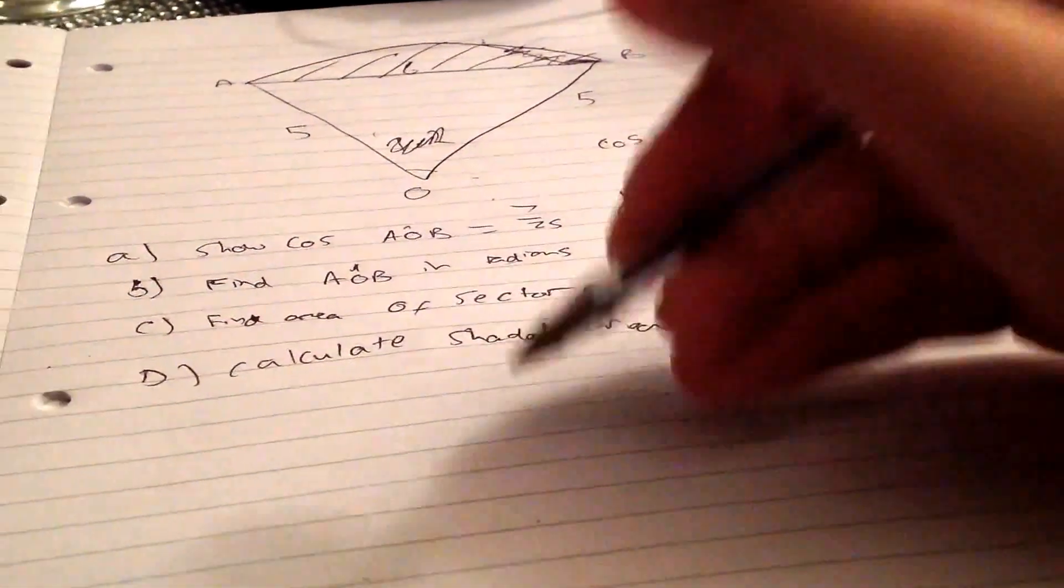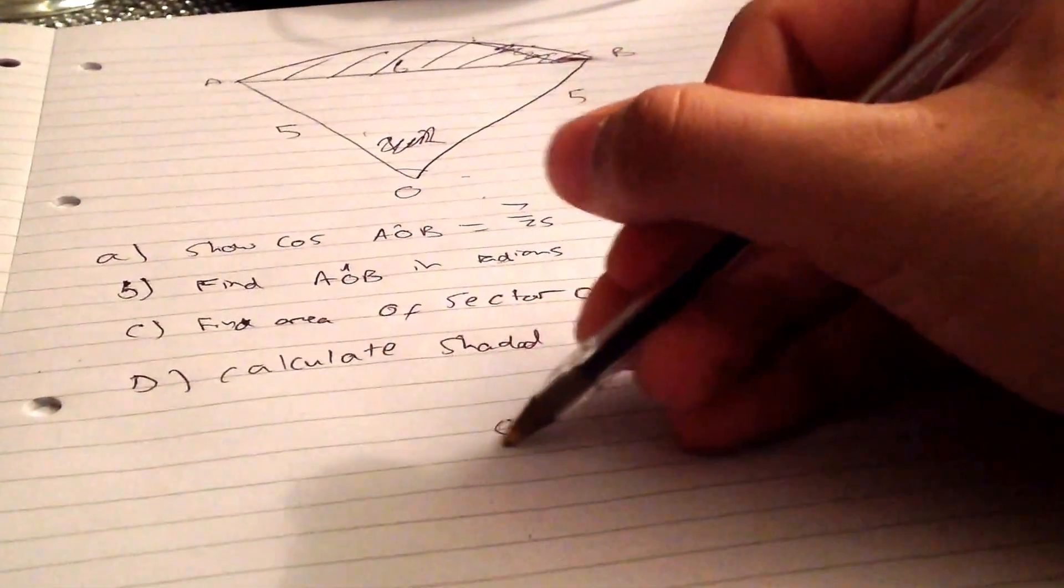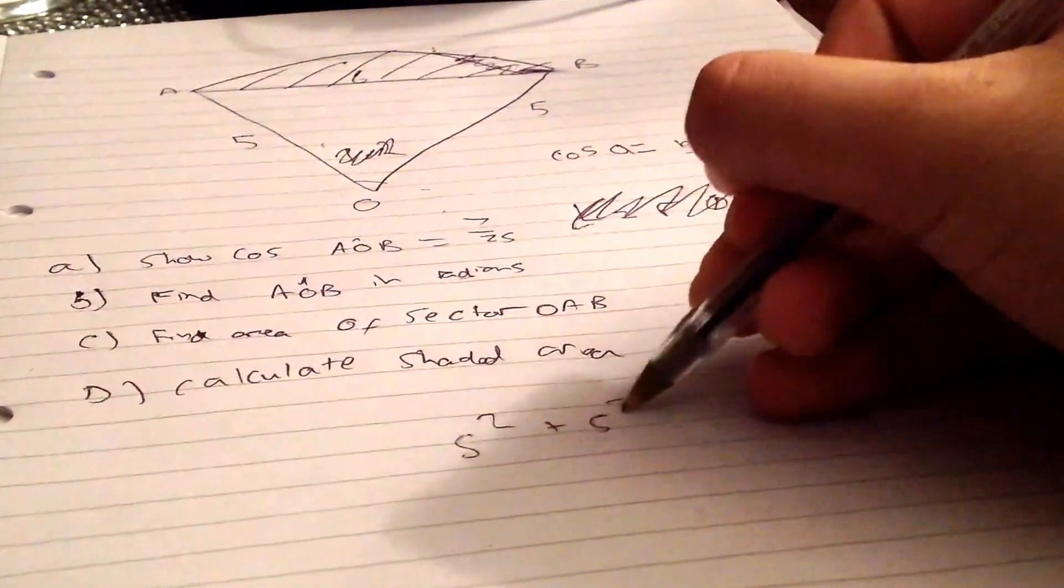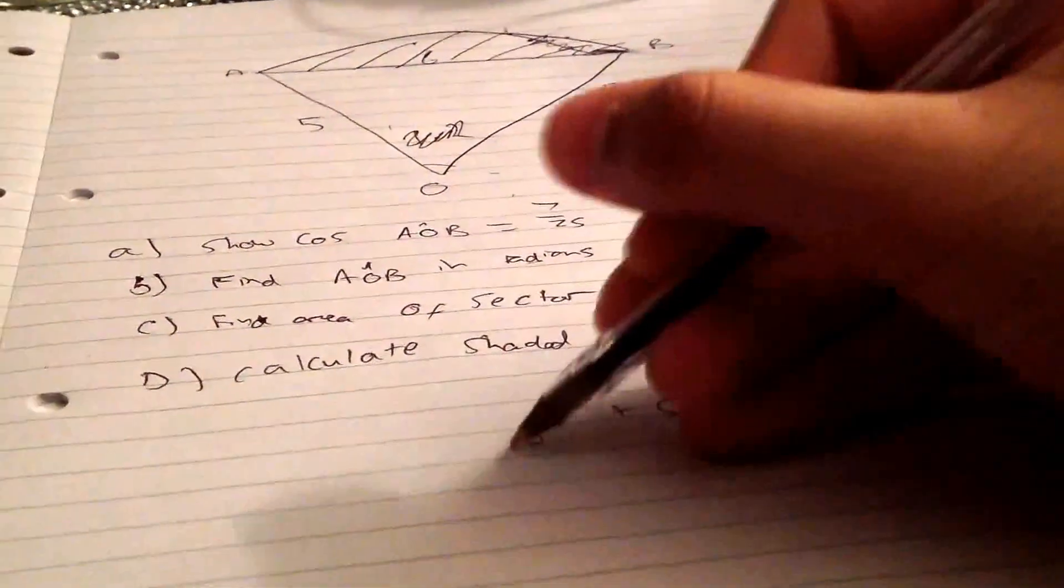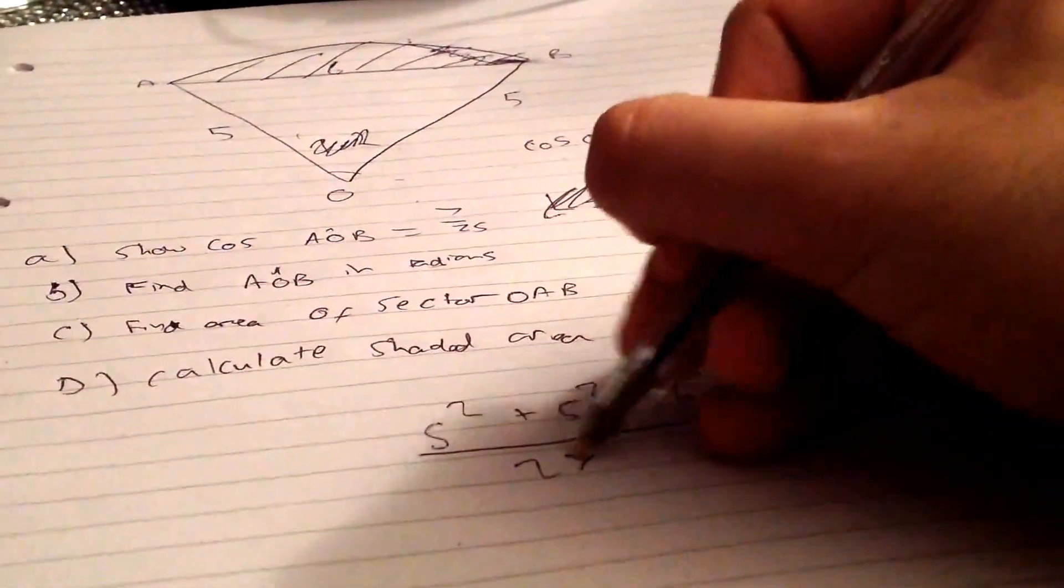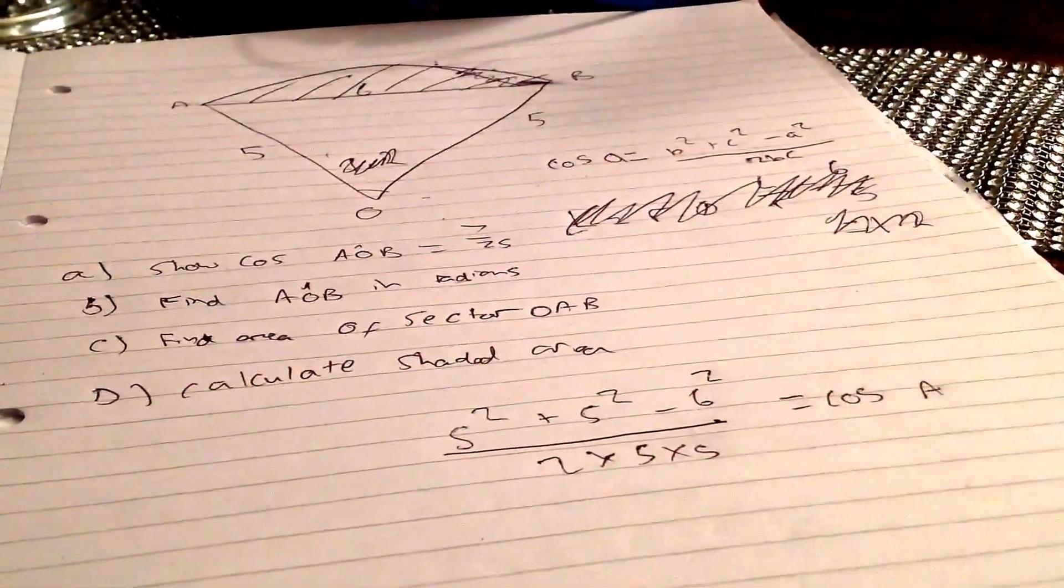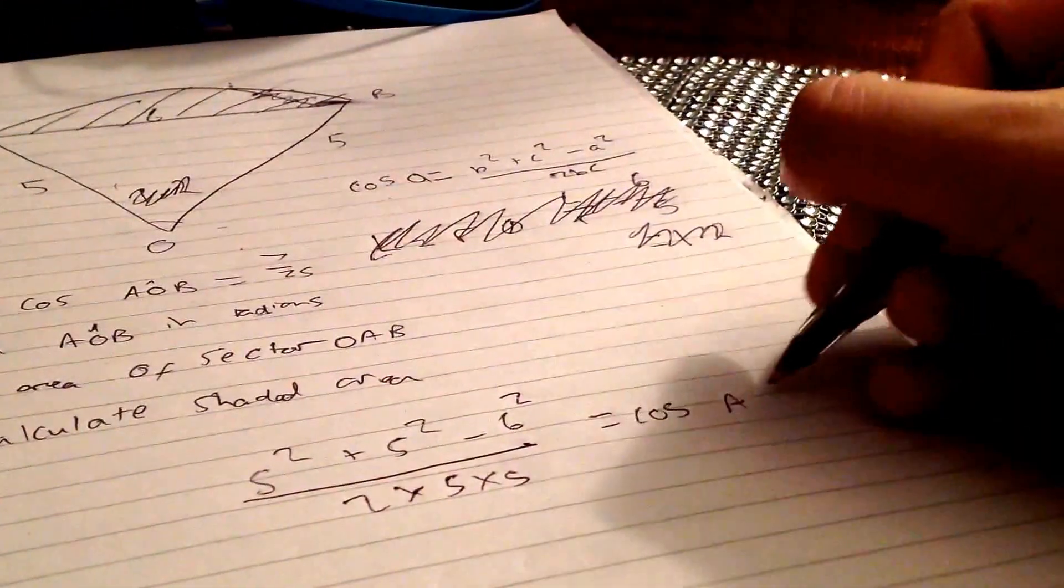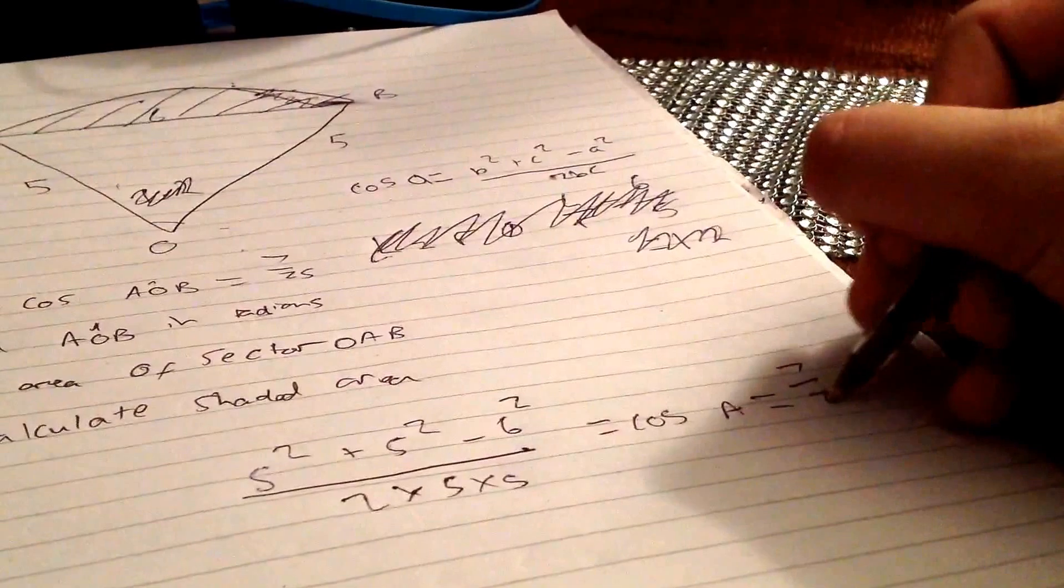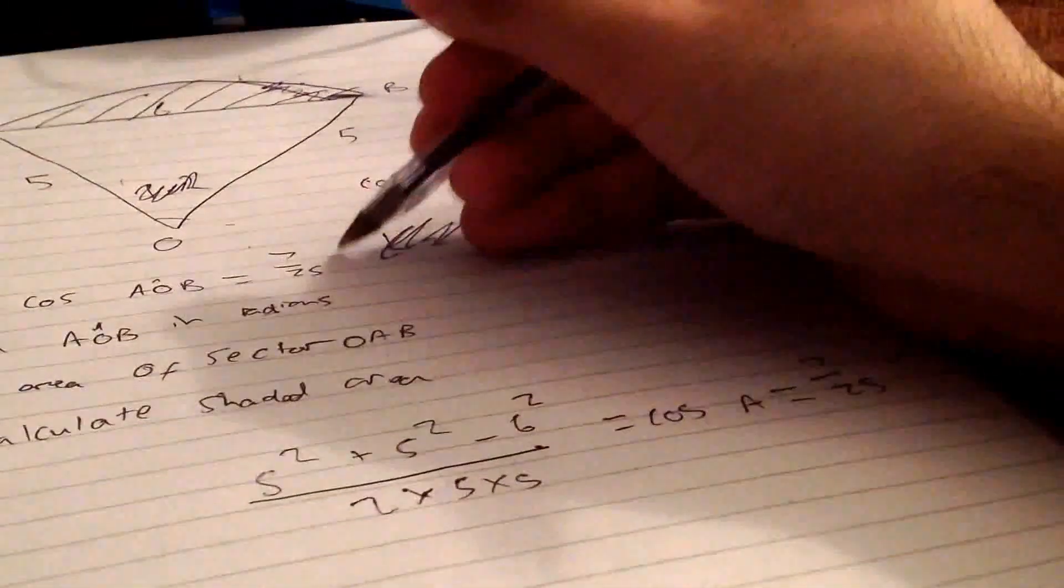Let me write it again: 5 squared plus 5 squared minus 6 squared over 2 times 5 times 5 equals cos A. I'm running out of space. That equals 7 over 25, so that's proved. We've done part A.